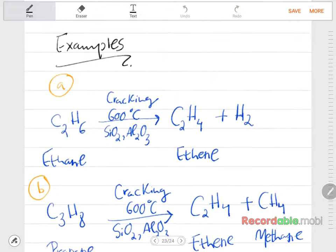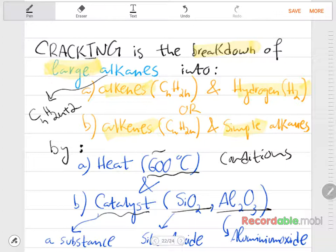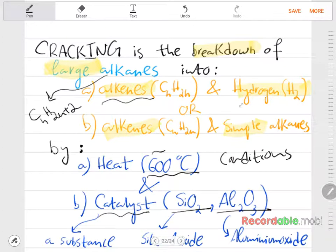Let's see some examples here. The conditions that we just talked about will be placed on the arrow. It's a must for you to put these in the exam. Here we have ethane. If we're going for the first option, which is an alkene and hydrogen, this is really simple.